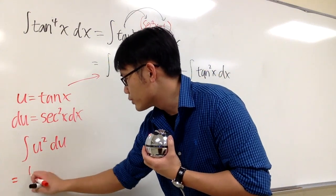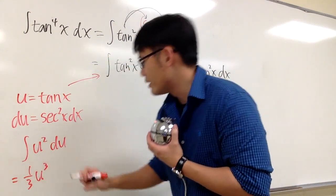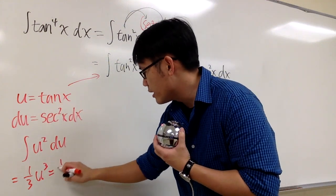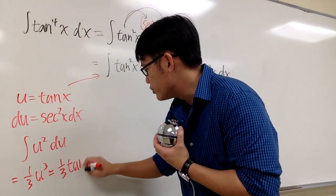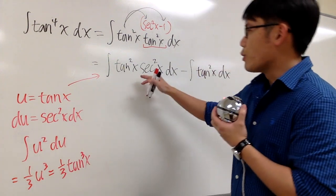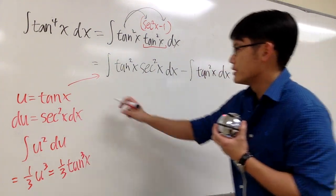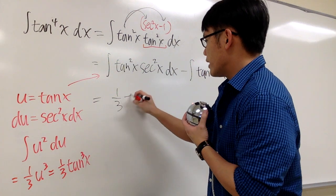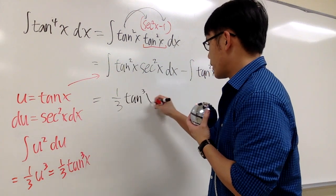So to integrate this, this is just 1/3 u to the 3rd power, and then u is equal to tangent, so we can just make the change again, 1/3 tangent to the 3rd power x. And that will be it for the first integral. So this right here is going to be 1/3 tangent to the 3rd power x.